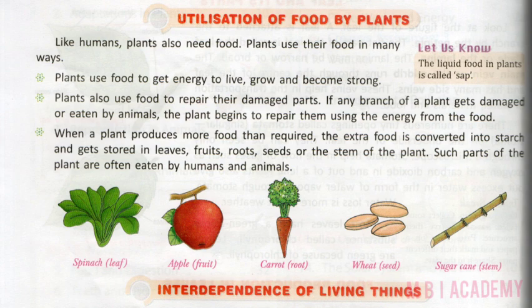When a plant produces more food than required, the extra food is converted into starch and gets stored in the leaves, fruits, roots, seeds or the stem of the plant. Such parts of the plant are often eaten by humans and animals.